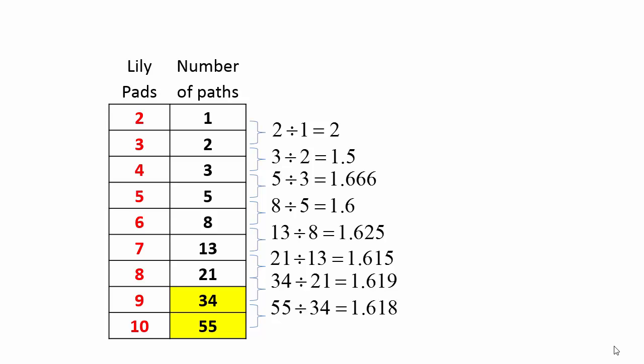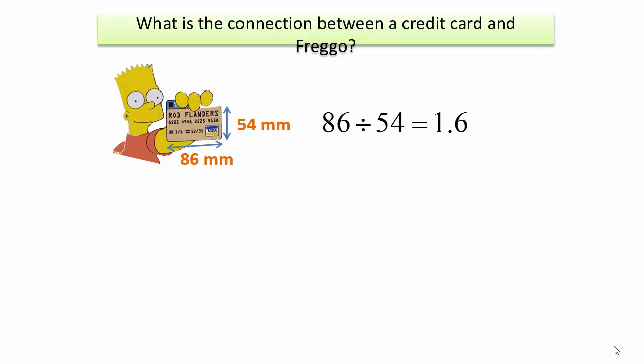It seems that the value converges or gets closer to the value 1.61. Now, what is the connection between the credit card and Freggo's way of jumping? Here's Bart holding the credit card. It is 86 millimeters long and 54 millimeters wide. If we take the ratio, we see that the answer is about 1.6.